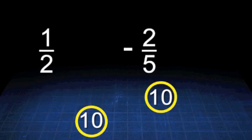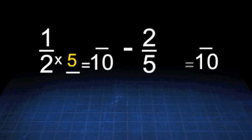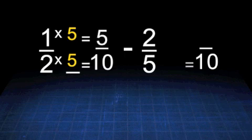Change 1 half into a fraction with a 10 as a denominator. 2 times what will give you 10? 5. Multiply both the denominator and the numerator by 5 to get 5 tenths.